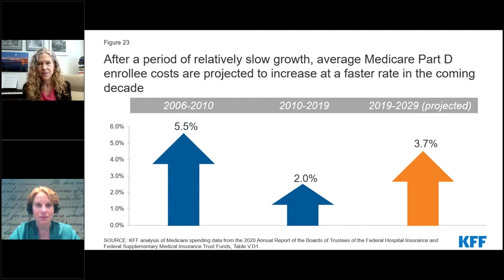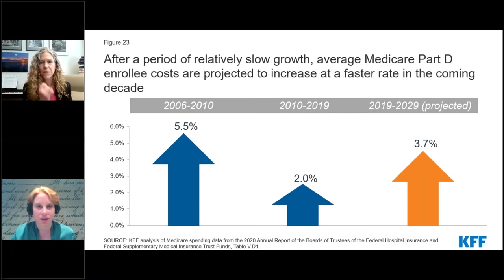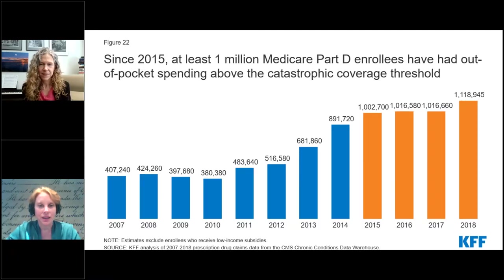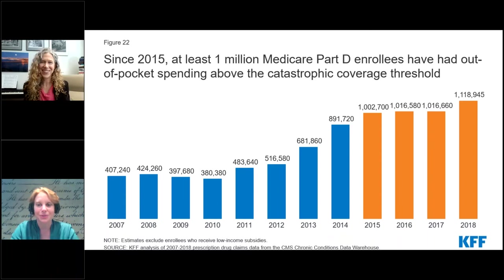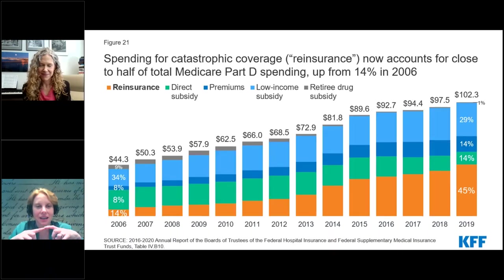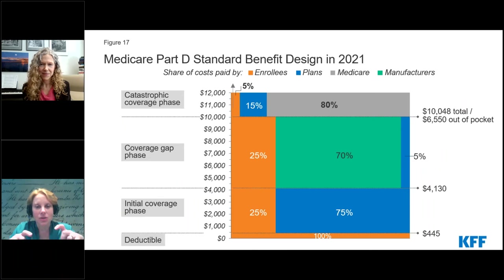As I understand it, Aduhelm will also have some ancillary costs from imaging and other doctor visits that are not accounted for in the particular price of just the medication itself. Let me ask about the trade-offs. Can you talk a little bit about the different incentives for plans versus manufacturers that are set up by the way the coverage gap is designed?